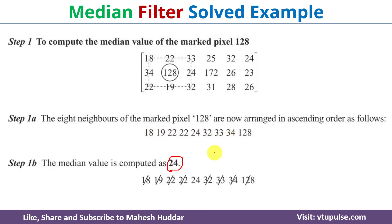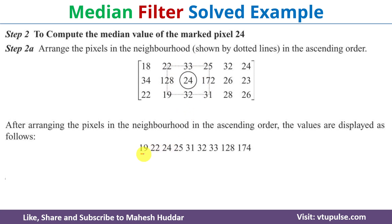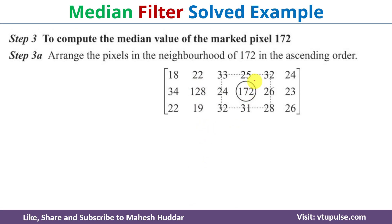Once you arrange these 9 values in ascending order, we get 24 as the middle value. So the median value is 24 for the marked pixel 128. Similarly, for the marked pixel 24, we consider this 3x3 neighborhood mask. We get 9 values, arrange them in ascending order, and get 31 as the middle value. So 31 is the median value for the marked pixel 24.